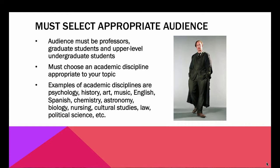Some examples of academic disciplines — it's pretty much any department in a college that offers classes: psychology, history, art, music, English, Spanish, chemistry, astronomy, biology, nursing, cultural studies, law, political science, dental hygiene, x-ray technology, phlebotomy — if there's a class in it, it's an academic discipline. There aren't too many things that wouldn't be appropriate for an academic discipline. Even gardening would be appropriate for horticulture, or cooking for the culinary arts. You have to choose which discipline would be interested in and knowledgeable about the topic you're writing on.